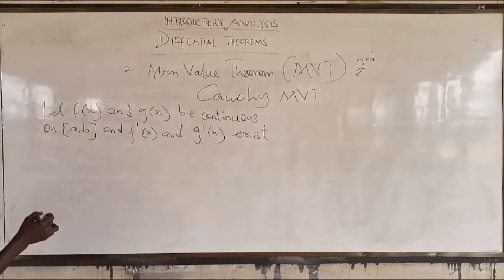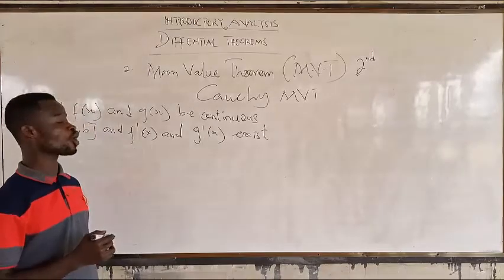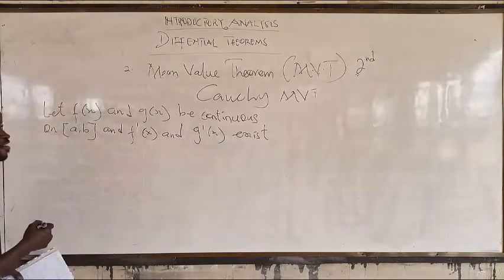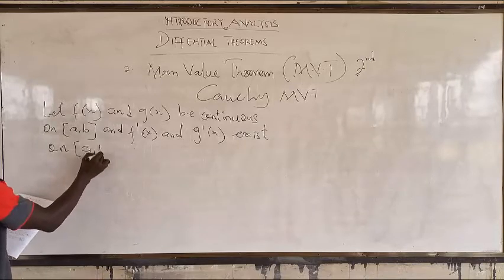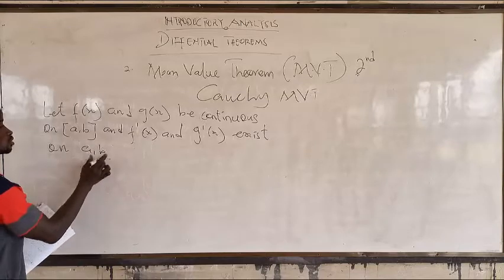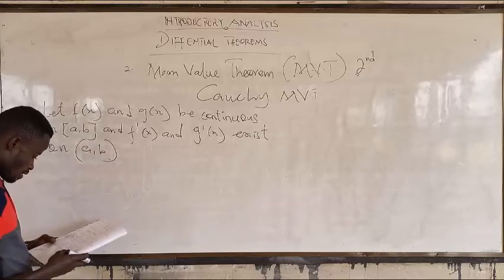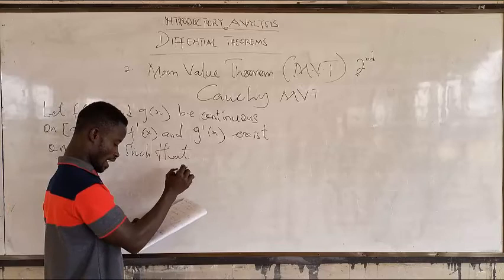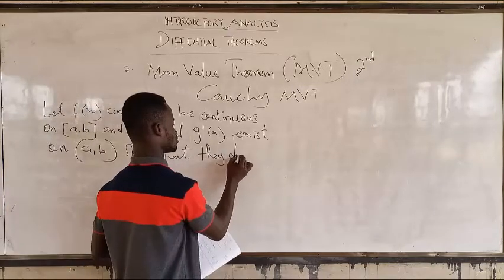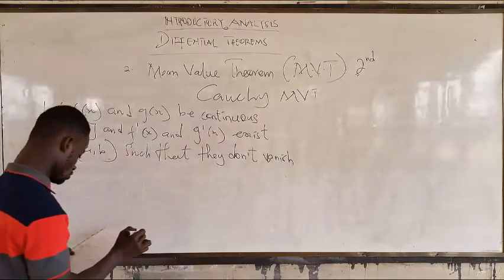When we call G, we have two functions: F of x and G of x. You check that both are continuous on the closed interval, and that F prime and G prime also exist on the open interval. One condition is closed and the other is open, such that they don't vanish together.